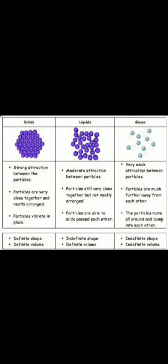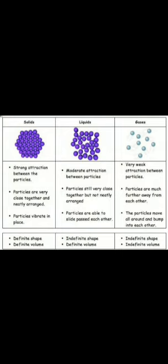Particles slide past one another, and this gives liquids the ability to flow. Liquids do not have a fixed shape — they take the shape of the container they are put in. Liquids change their shape but have a definite volume. For example, water is the liquid state of matter. Water present in a glass and in a jug takes different shapes depending on the container.